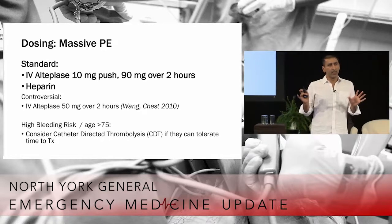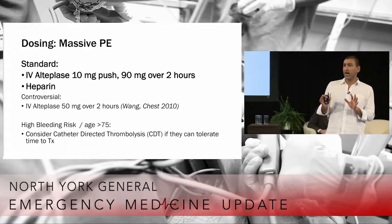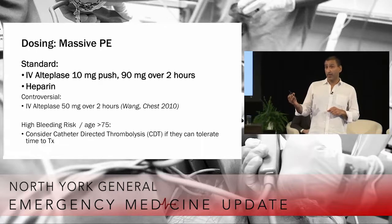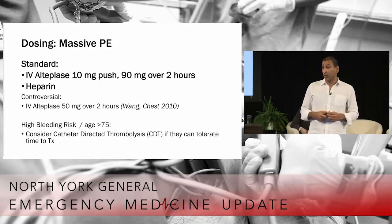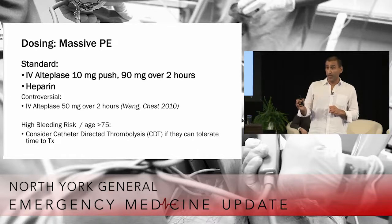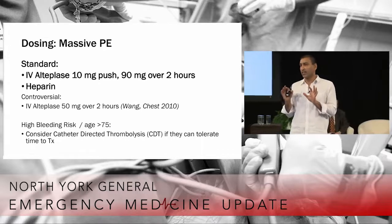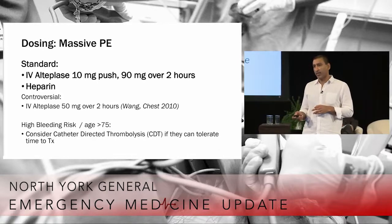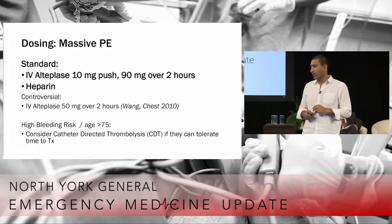Catheter-directed thrombolysis (CDT) is another topic. The brief summary is that the data seems promising that CDT or interventional radiology can reduce bleeding risk when administering alteplase — dripping in 1 milligram per hour directly into the clot. However, all study data is poor quality; they're all single-arm studies with no head-to-head comparisons. CDT is expensive, resource-intensive, and prolongs ICU stay. Reserve it for people with high bleeding risk — those who are unstable and want thrombolysis but aren't candidates for systemic thrombolysis. Consider transferring or calling your interventionalist.